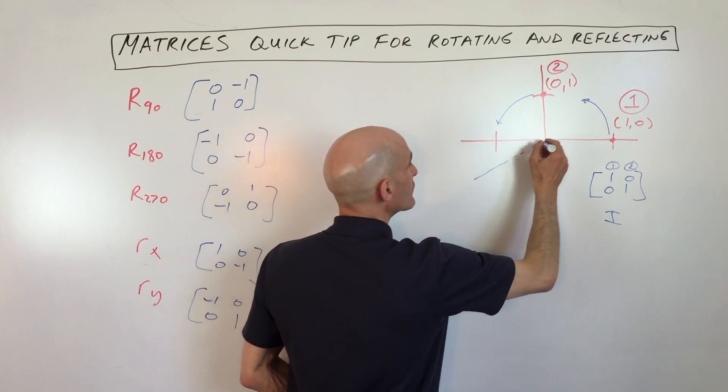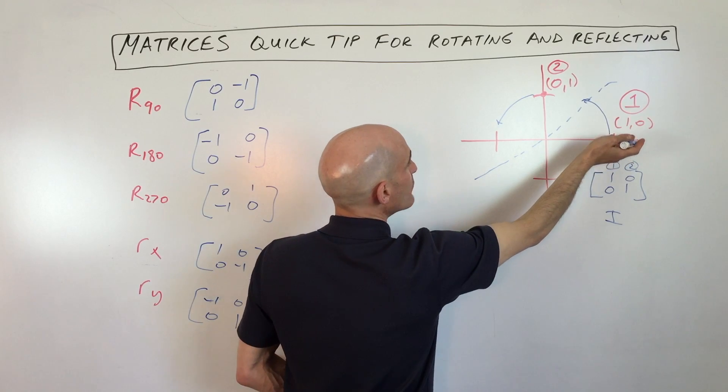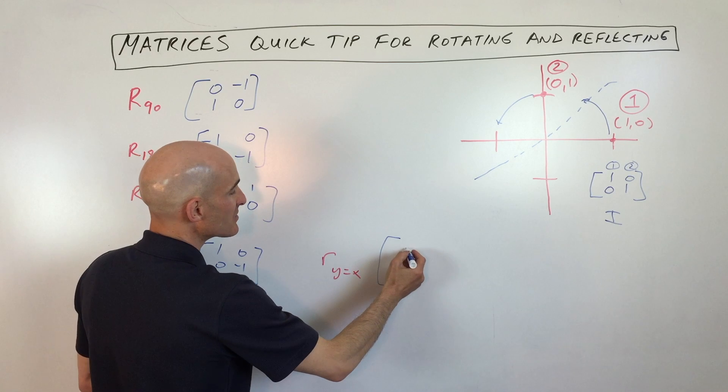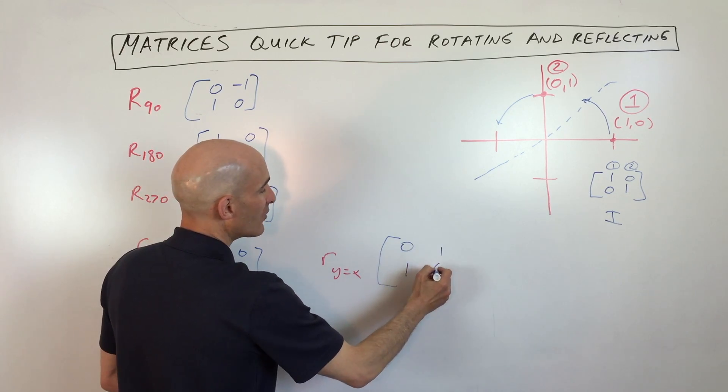And then the line y equals x, that's this 45-degree line here. This point is going to be where point two is. Point two is going to be where point one is. They're actually going to interchange positions. So that's going to be zero, one, and one, zero.